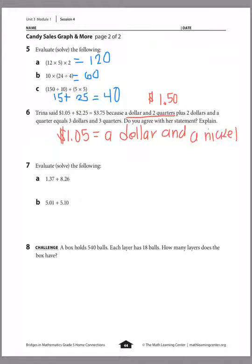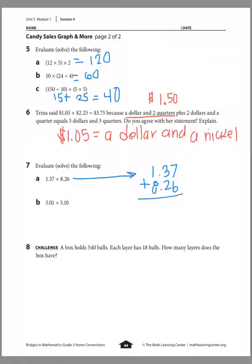Number seven asks us to evaluate or solve decimal addition. I highly recommend writing decimals vertically to line them up properly. For one and thirty-seven hundredths plus eight and twenty-six hundredths: seven plus six is thirteen, carry the one; three plus two plus one is six; bring down the decimal; eight plus one is nine. The answer is nine and sixty-three hundredths. Similarly, five and one hundredth plus five and ten hundredths equals ten and eleven hundredths.